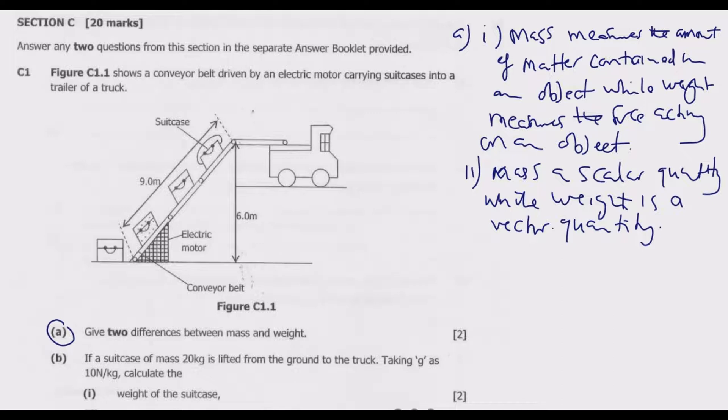This question is a standard question. If they ask you for three differences, what you add is that mass does not depend on the place - the amount of matter remains the same whether you are on the moon or on earth. But your weight depends on the place. If you go in the vacuum, there is no gravitational field, so weight will be zero, but mass will still be there.